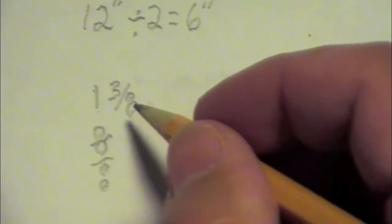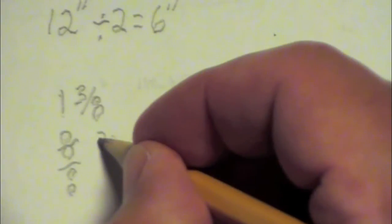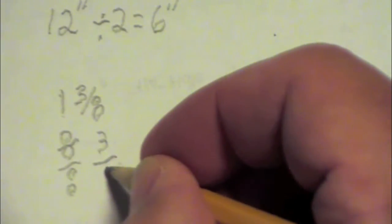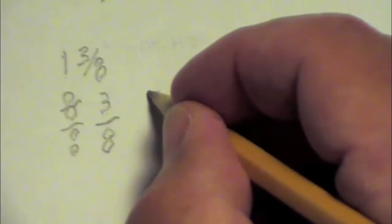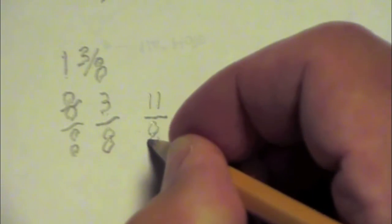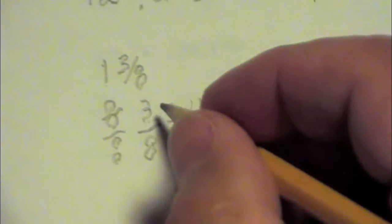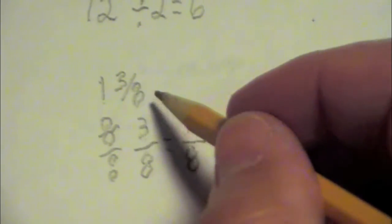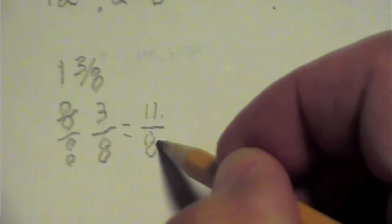That would be eight eighths in the one. So now we have to add three-eighths to the eight-eighths. Three-eighths to the eight-eighths. We simply add straight across. Eight and three is eleven. And the bottom doesn't change.